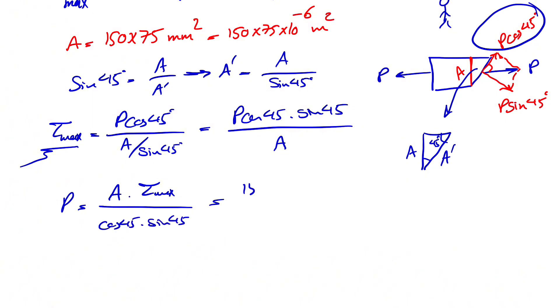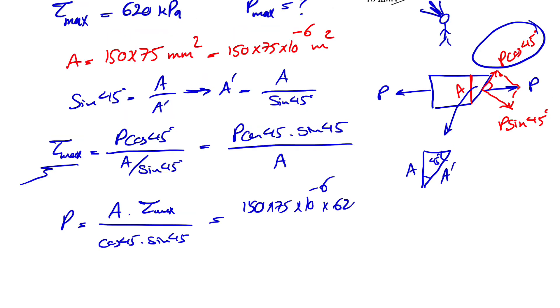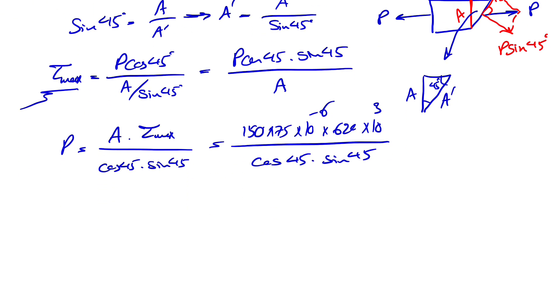So the area we found in the previous part, 150 times 75 times 10 to the minus 6 times the shearing stress is 620 kilopascals. So we're going to multiply it by 1,000 kilopascal, and we keep the denominator the same.